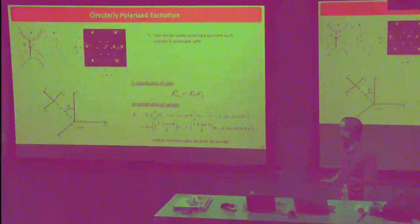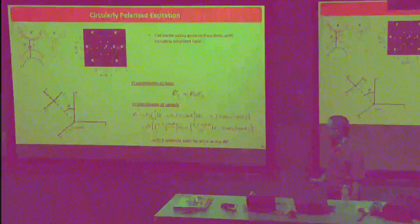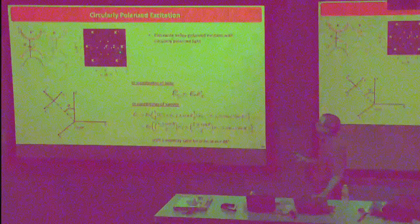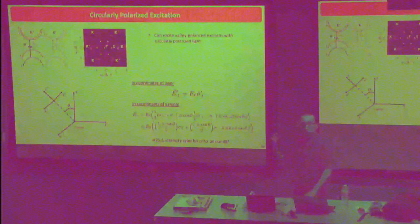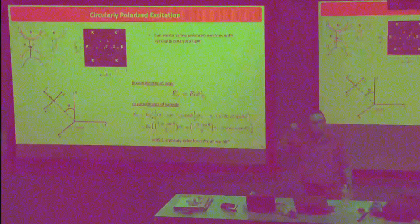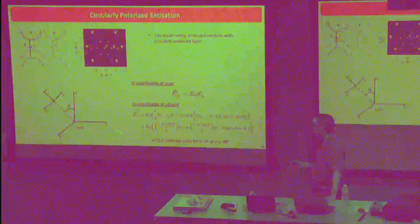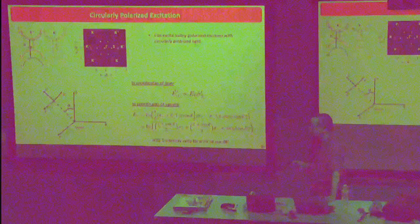We model this with a so-called global analysis, a standard ultrafast spectroscopy technique: breaking the signal into two components with two spectral components times simple exponential dynamics. We get two spectral components: the green curve is the initially excited distribution of binding energies, peaked at the excited A-excitons, as confirmed by the fitting. The green component decays into the lower-energy component in about 400 femtoseconds, and that lower-energy state lives for a long time.